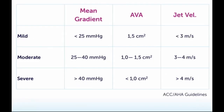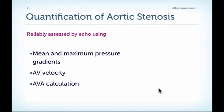We can put all these measurements into clinical context using the grading table of aortic stenosis severity. Severe aortic stenosis is defined as a mean gradient above 40 mmHg, a valve area below 1 square centimeter, and a jet velocity above 4 meters per second — these patients need close follow-up. Today, echocardiography is the gold standard and can reliably quantify aortic stenosis by assessing mean and maximum pressure gradients, aortic valve velocity using several Doppler windows, and calculating the aortic valve area.